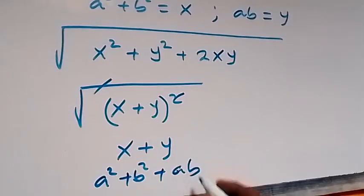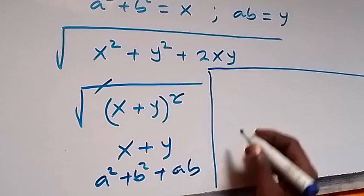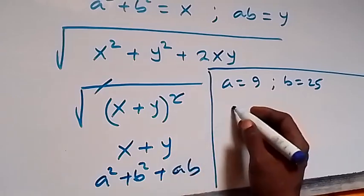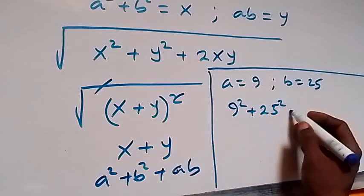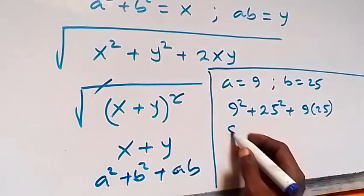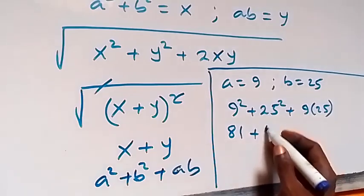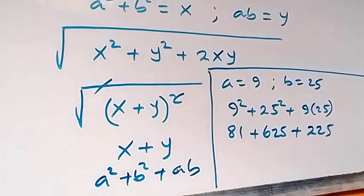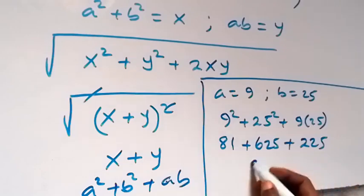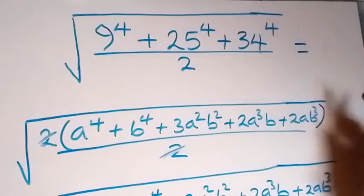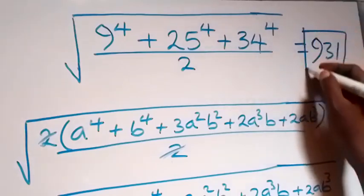The square root then cancels the square, and we have x plus y. Since x is a squared plus b squared, that gives a squared plus b squared, and y is ab, so plus ab. Recalling that a equals 9 and b equals 25: 9 squared plus 25 squared is 81 plus 625, which is 706, then plus 9 times 25 which is 225. Summing these together gives us 931. So the final answer to this problem is 931.